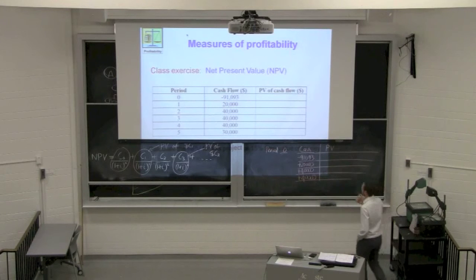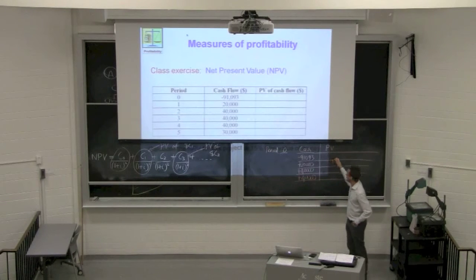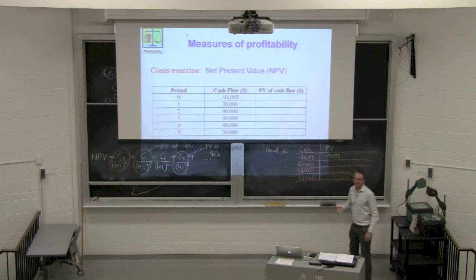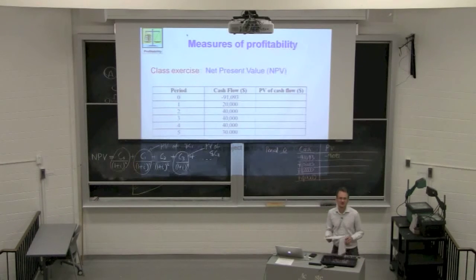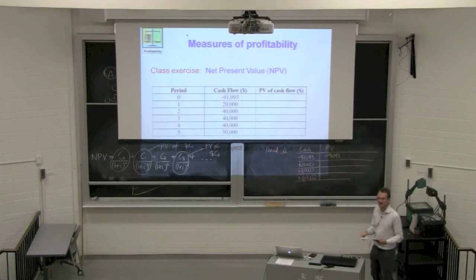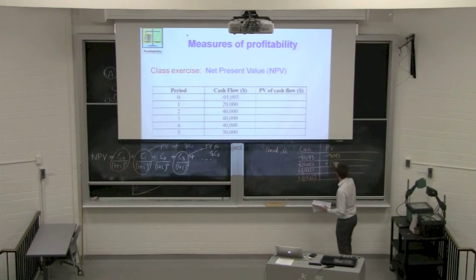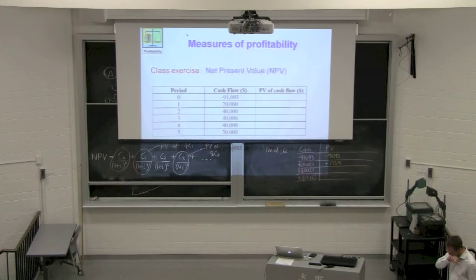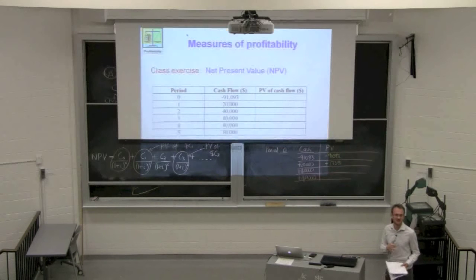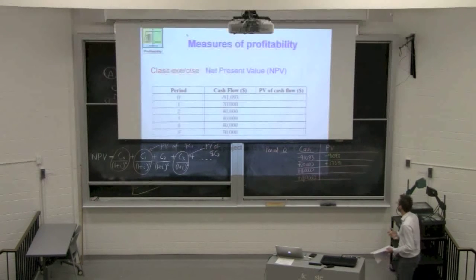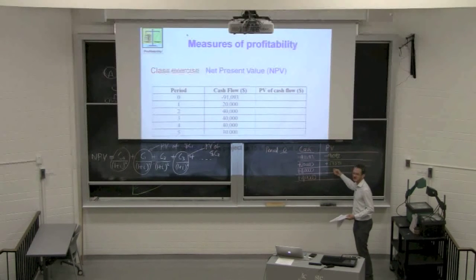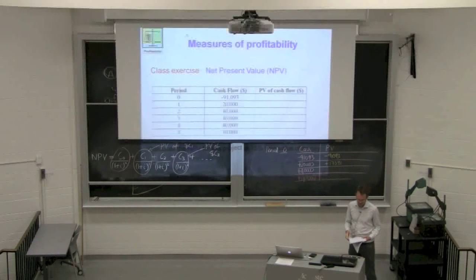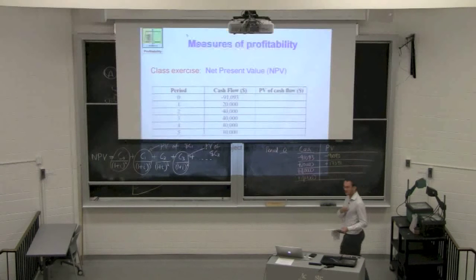Let's calculate the NPV for that sequence of cash flows. The present value of the first cash flow is −$91,000. At 15% time value of money, the present value of the second cash flow ($20,000 one year out) is $17,391. The next cash flow of $40,000 gives a present value of approximately $30,245.